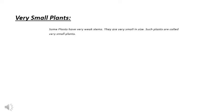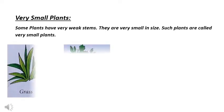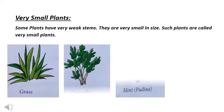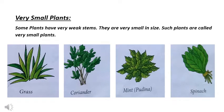Now, very small plants. Some plants have very weak stems. They are very small in size. Such plants are called very small plants. For example, grass, coriander, mint, spinach, etc.